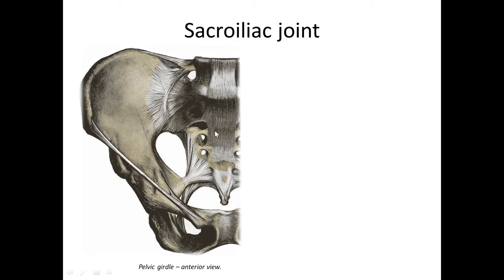The joint that connects the pelvic girdle from the back is the sacroiliac joint. It is a plain joint because the joint surfaces have a flat shape.